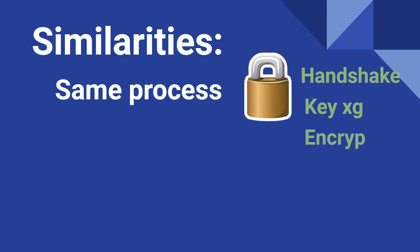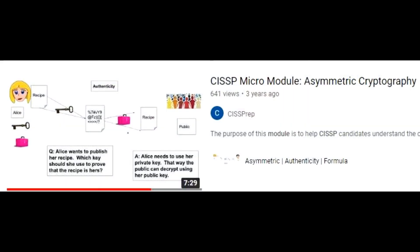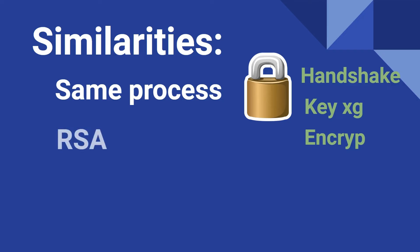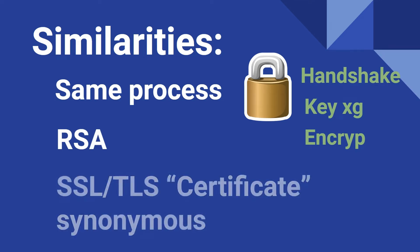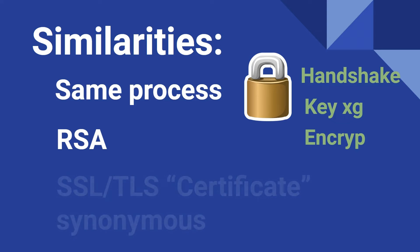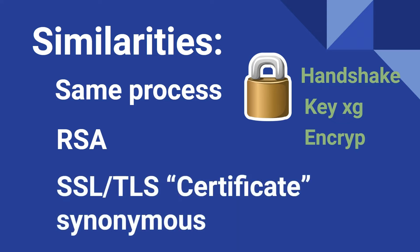If you'd like more information on how that process works, we have a separate video that covers asymmetric encryption, where we explain with visuals how the process works. Both protocols can use an algorithm called RSA, or Rivest-Shamir-Adleman, for key exchange. The terms SSL certificate and TLS certificate mean the same thing — they are often used interchangeably in the industry.